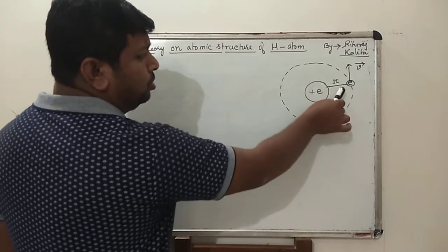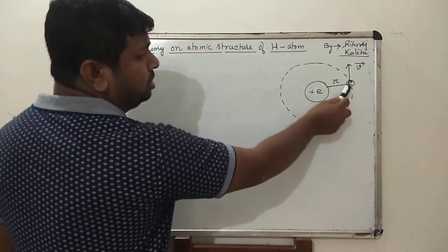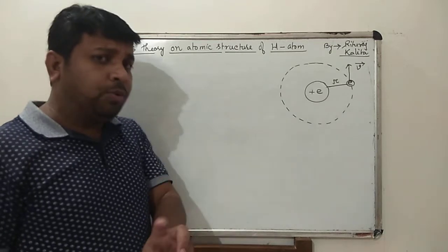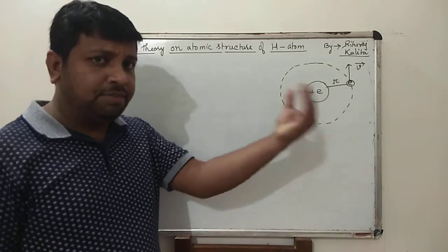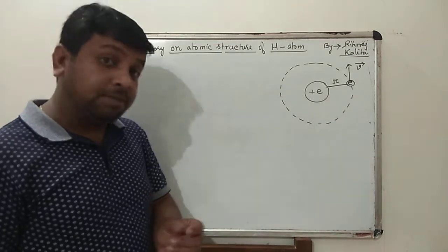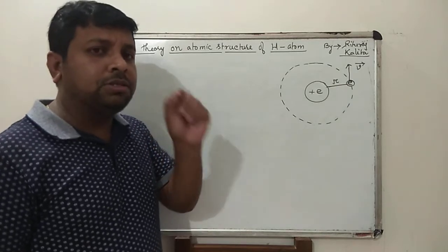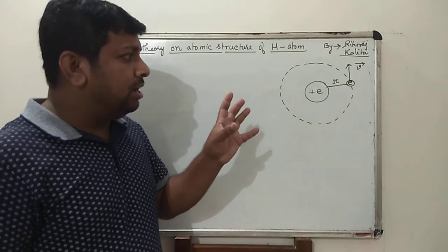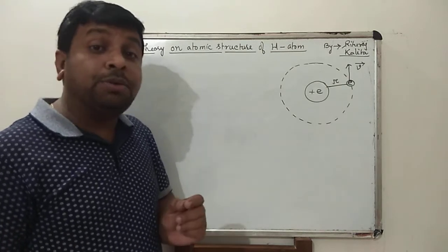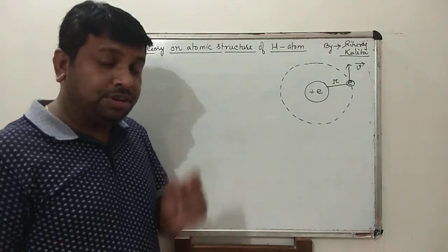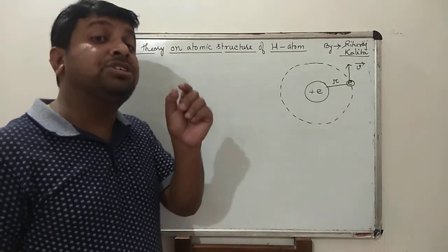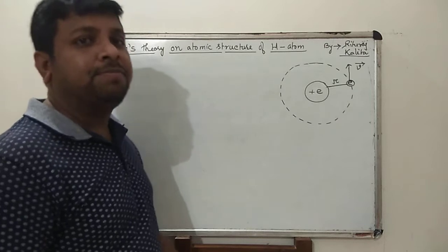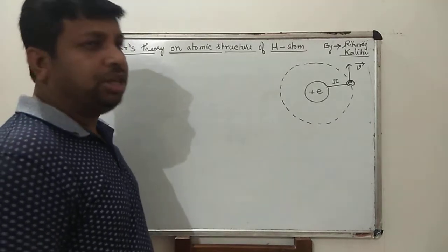When the electron is revolving around the nucleus in that orbit, then a force is required. As already discussed in the previous lecture, that is centrifugal force. The electron revolves around the nucleus in a circular orbit of radius R with a definite velocity. That centrifugal force is provided by the electrostatic force in between.